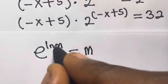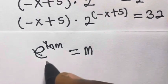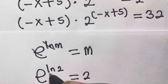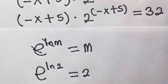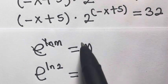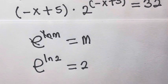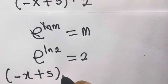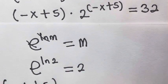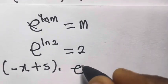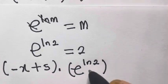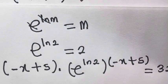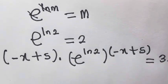This applies when we have ln of exponential of ln(2), which equals 2, because the exponential cancels. So now from here, we replace this 2 with exponential of ln(2). So we have minus x plus 5 times exponential of ln(2) raised to power minus x plus 5, and this equals 32.